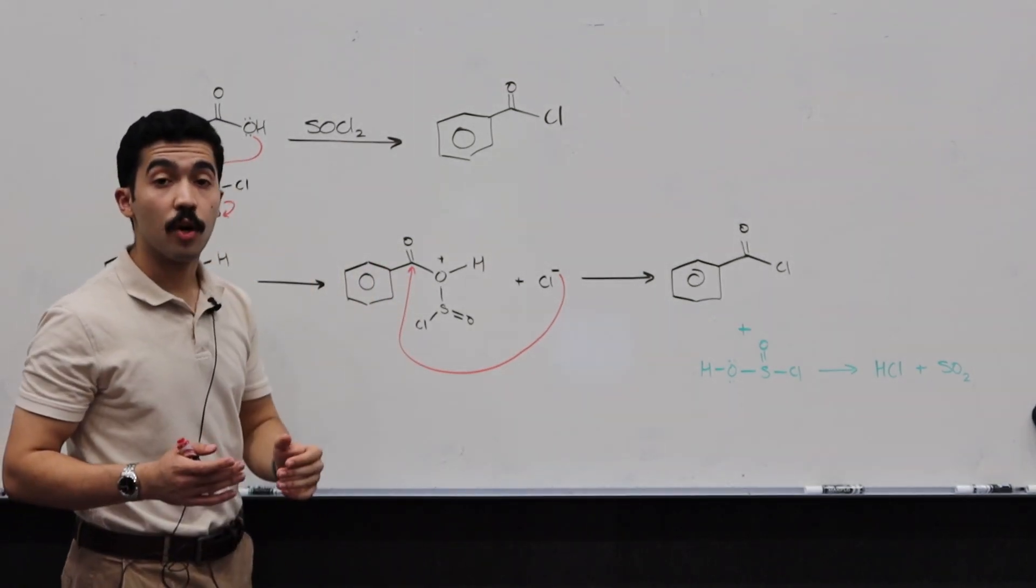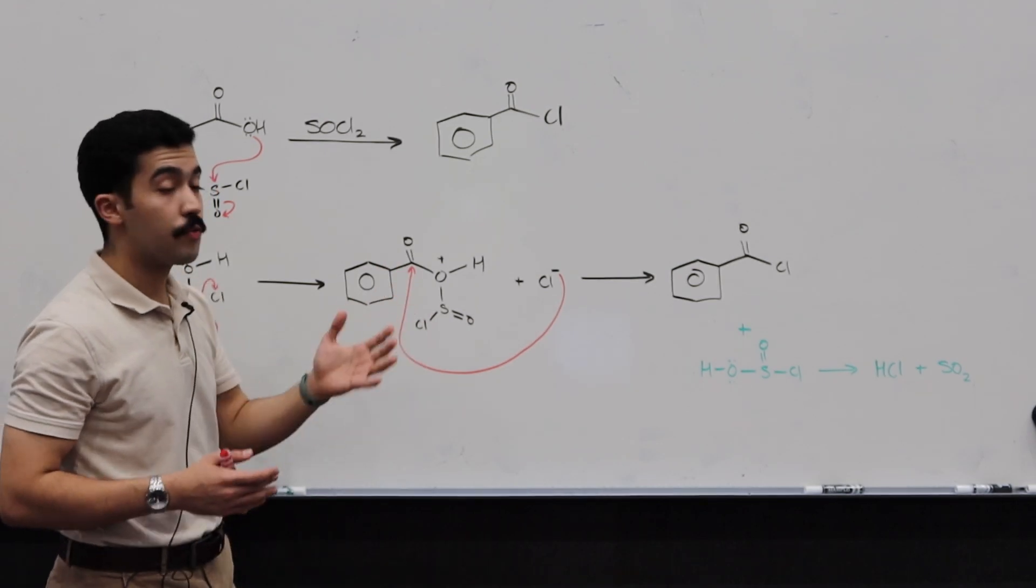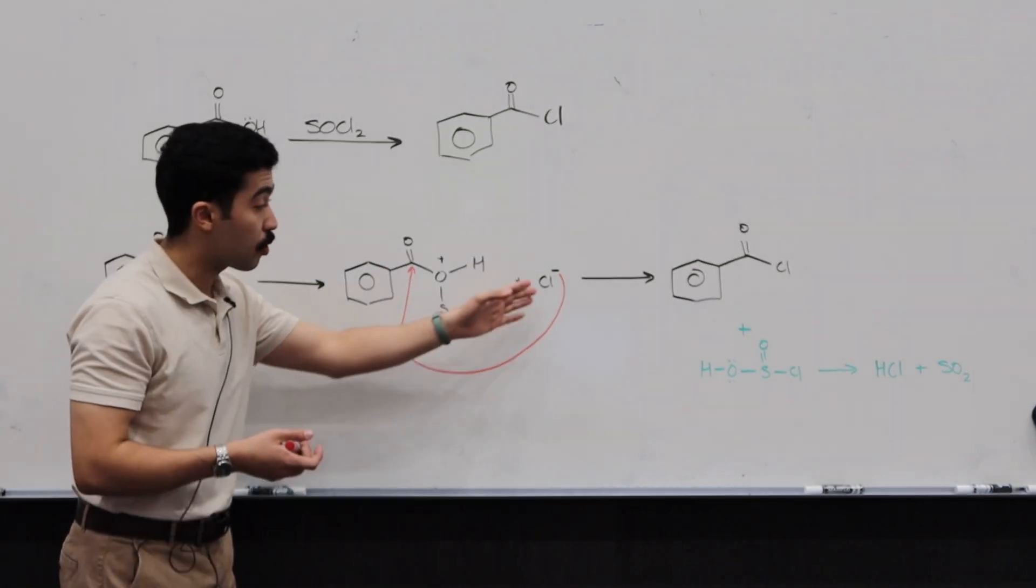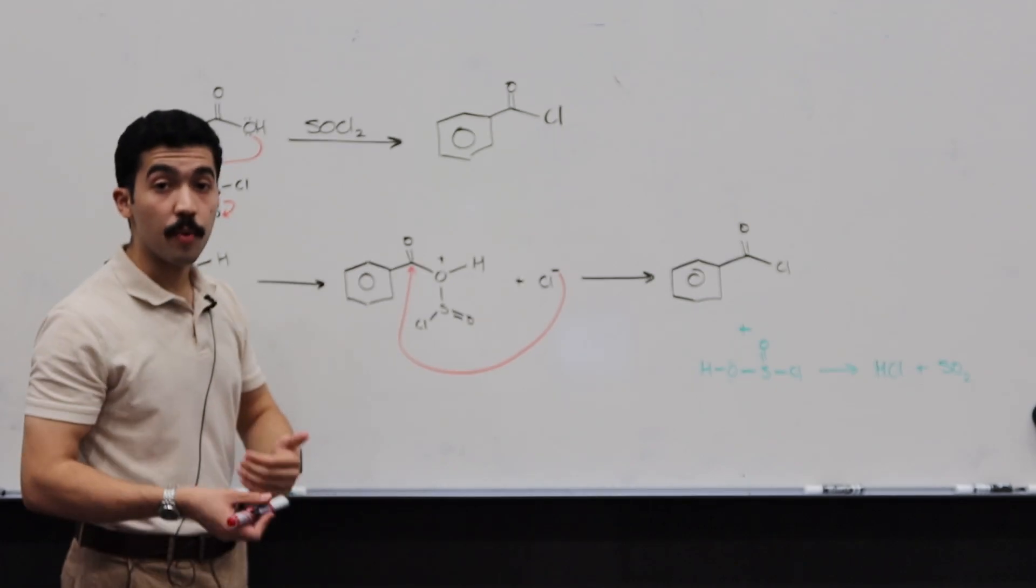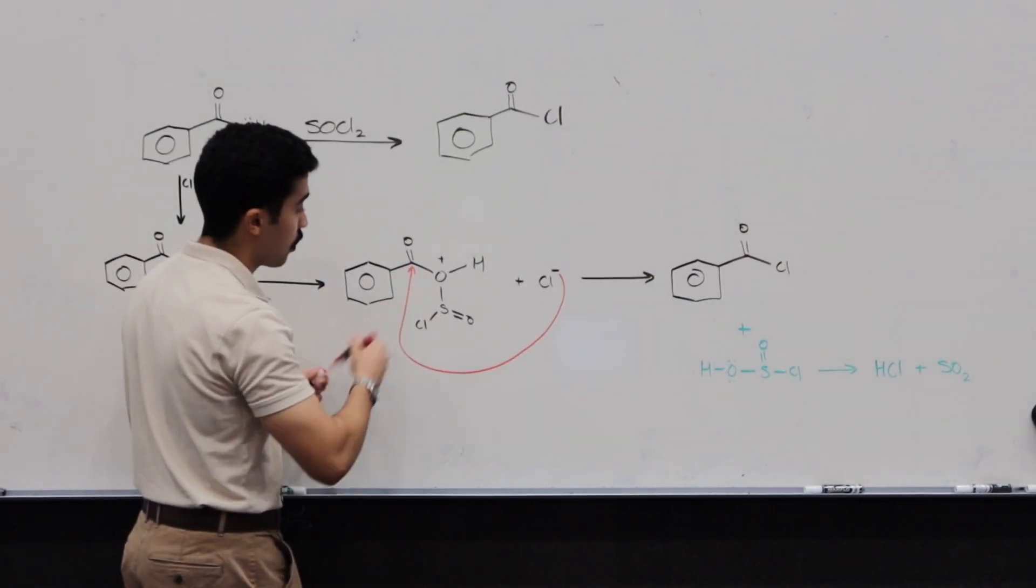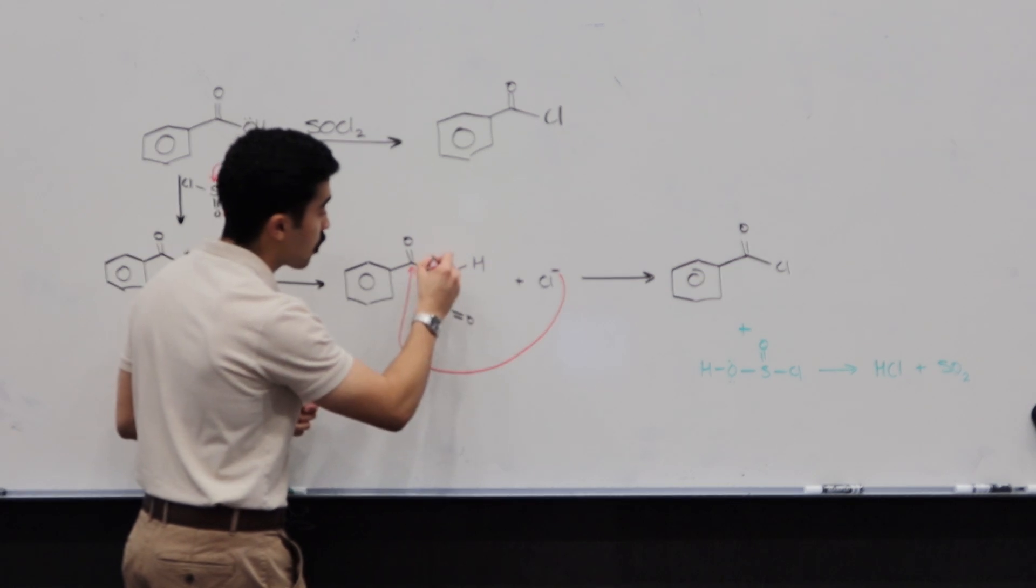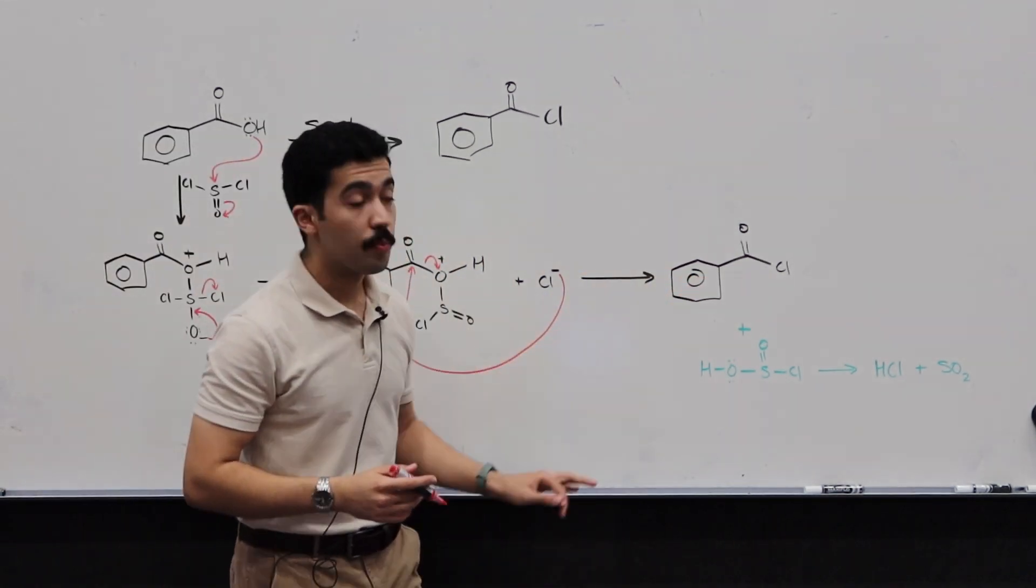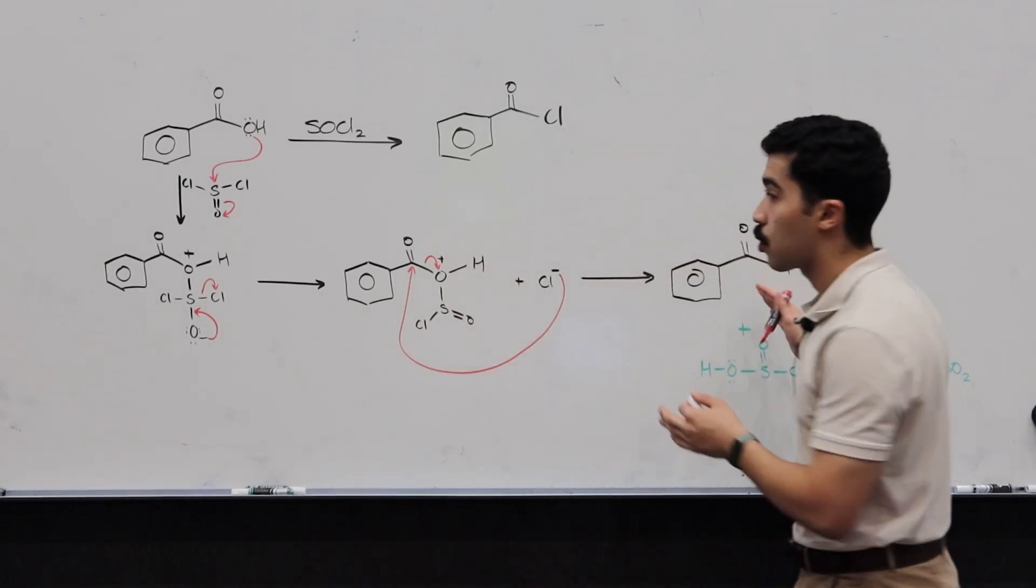When that happens, we know that carbon can only have a maximum of four bonds. If you have five, you've got a problem. So in this case, if we do have the chlorine attack, one of these bonds is going to break. The most susceptible bond that is going to break is going to be this bond. So this bond is going to break. And we get our final product. And our final product is benzoyl chloride in this case.